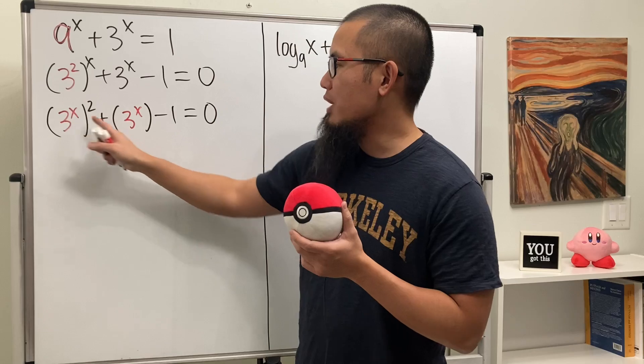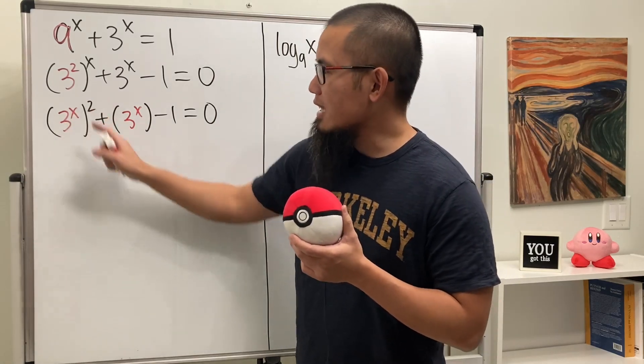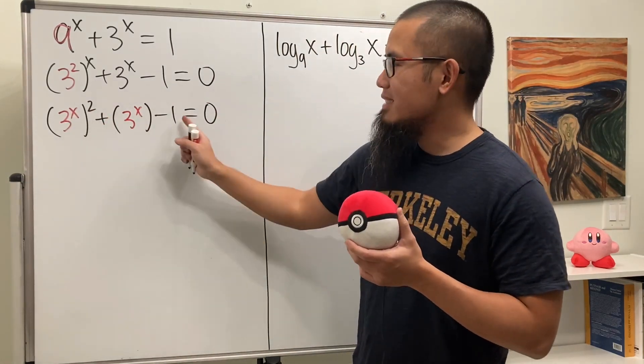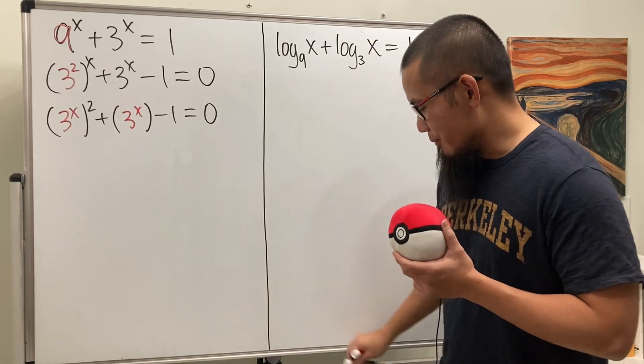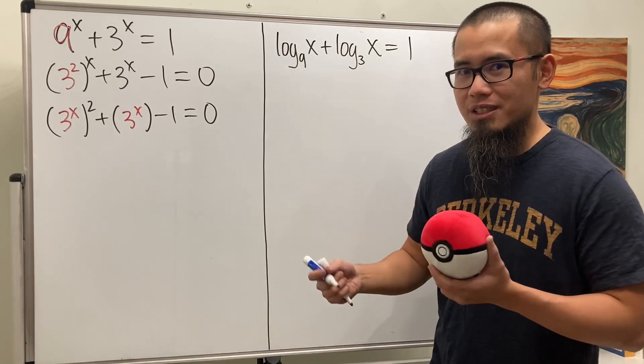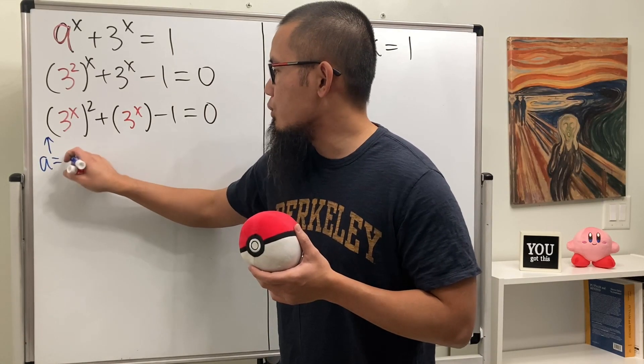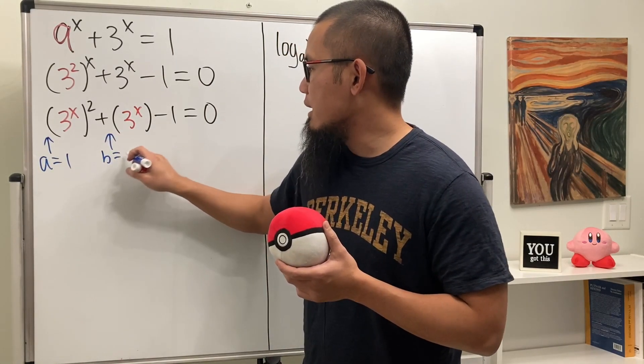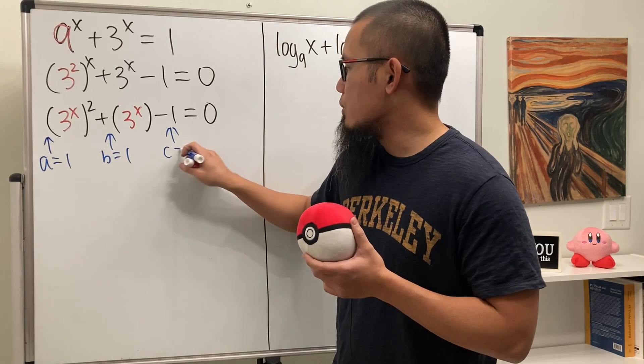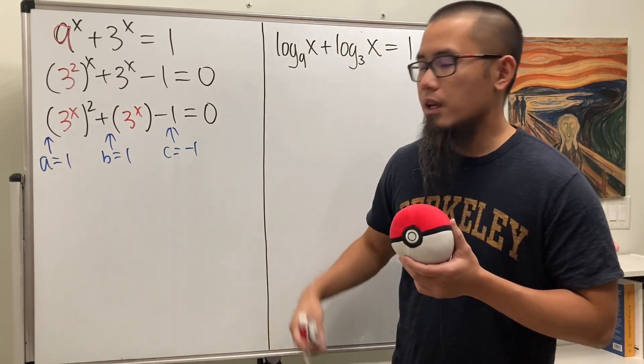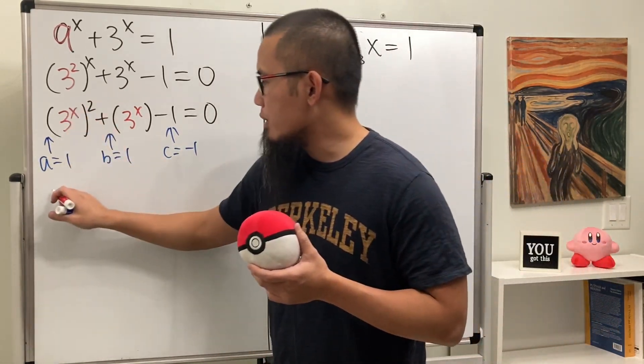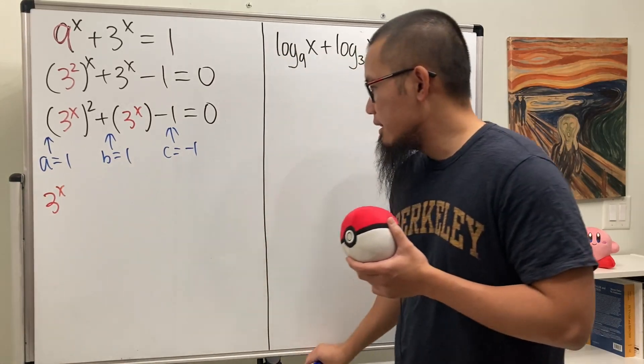We have this to the second power and this to the first power, and this term doesn't have that, so we can use the quadratic formula. Let me emphasize that a is equal to 1, b is equal to 1, and c is equal to negative 1.